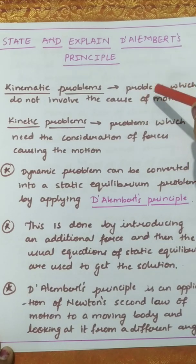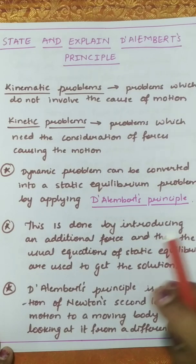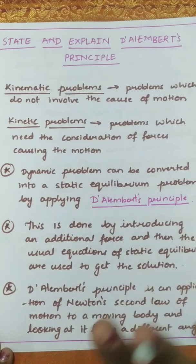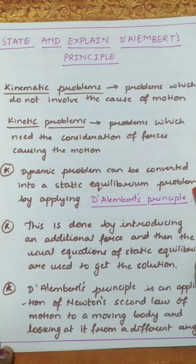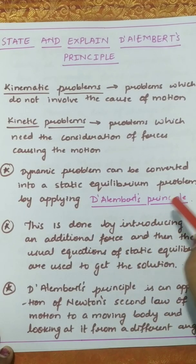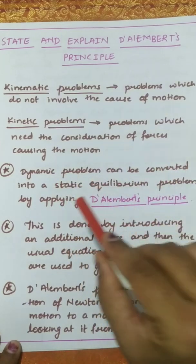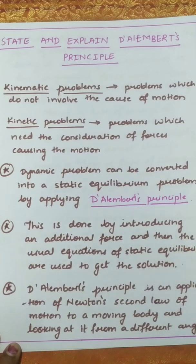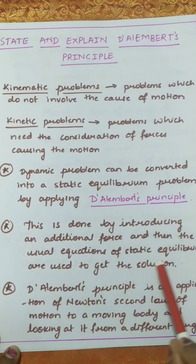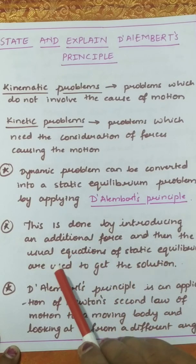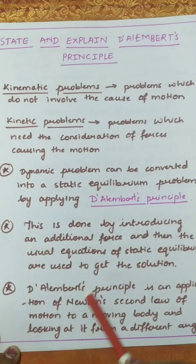Dynamic problems — when a body is in motion — can be converted into a static equilibrium problem by applying D'Alembert's principle. This is done by introducing an additional force, and then the normal equations of static equilibrium can be used to solve the problem.